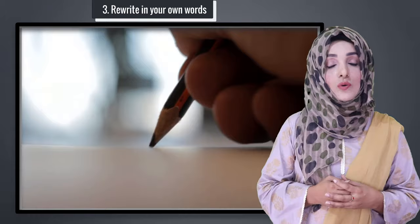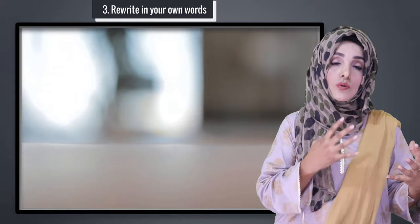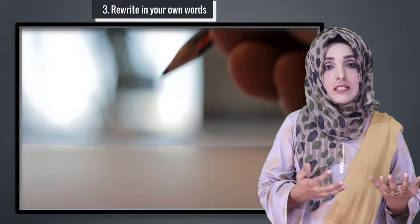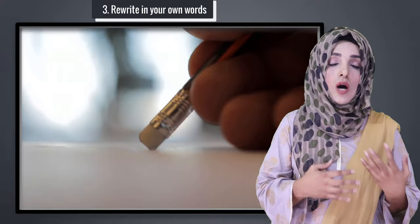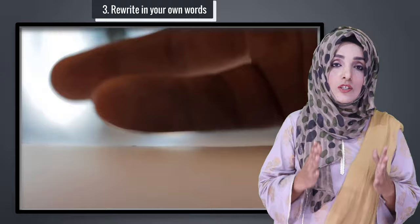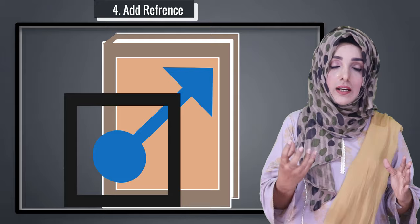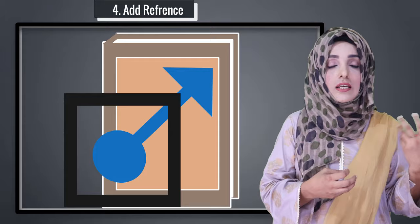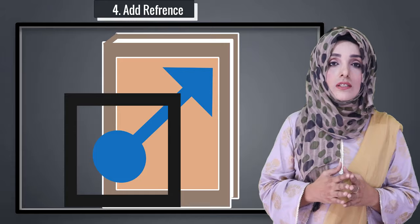The third step is to re-write that information in your own words. The fourth step is to add the reference. For that paragraph, you have to quote the reference of that person so that your paraphrasing process is 100% complete and free from plagiarism.